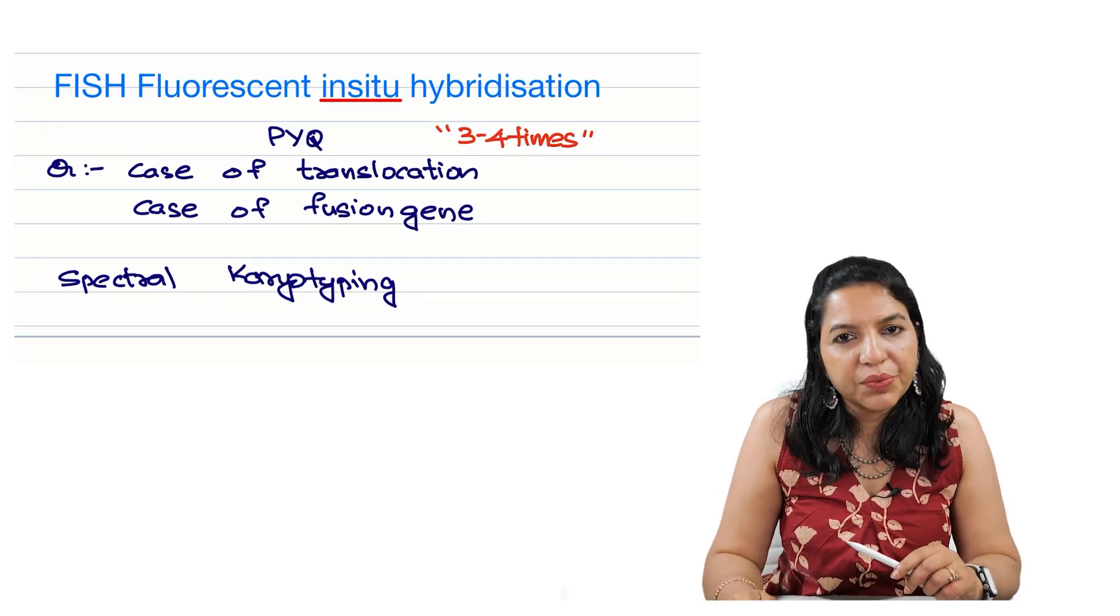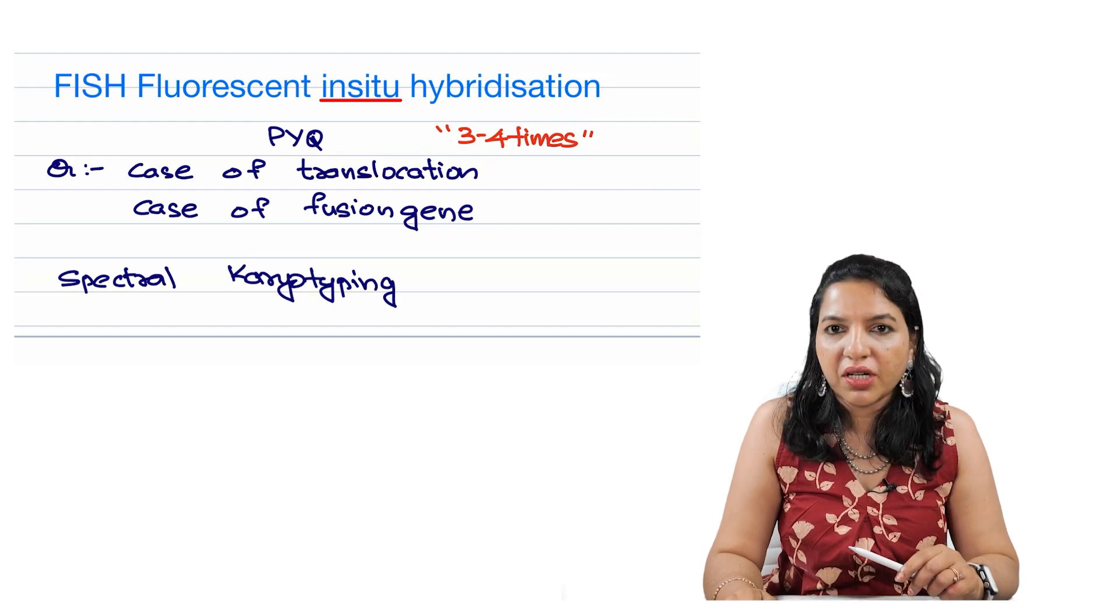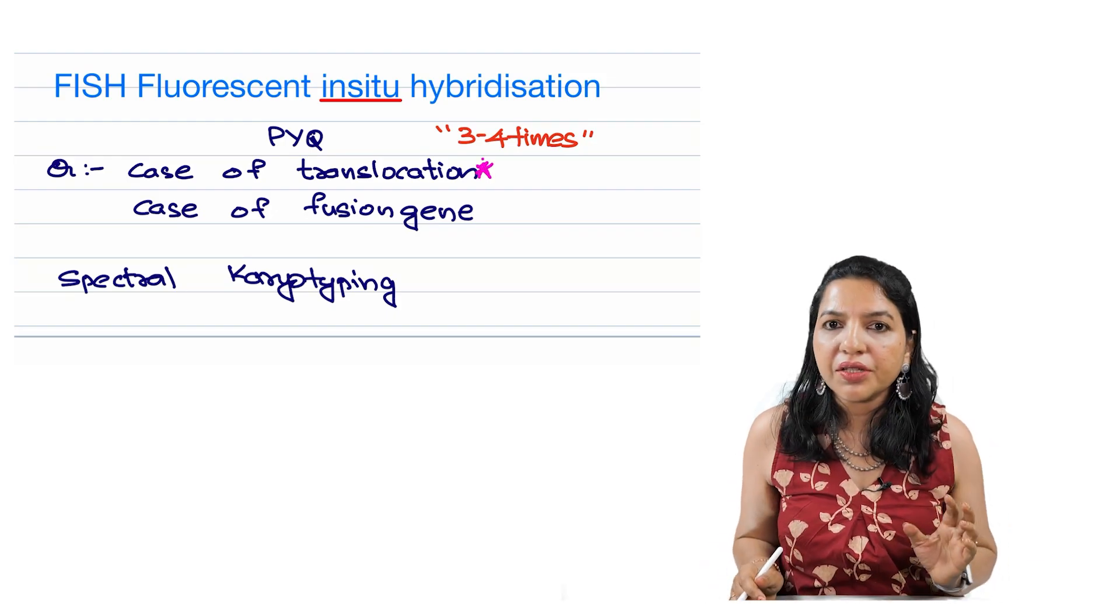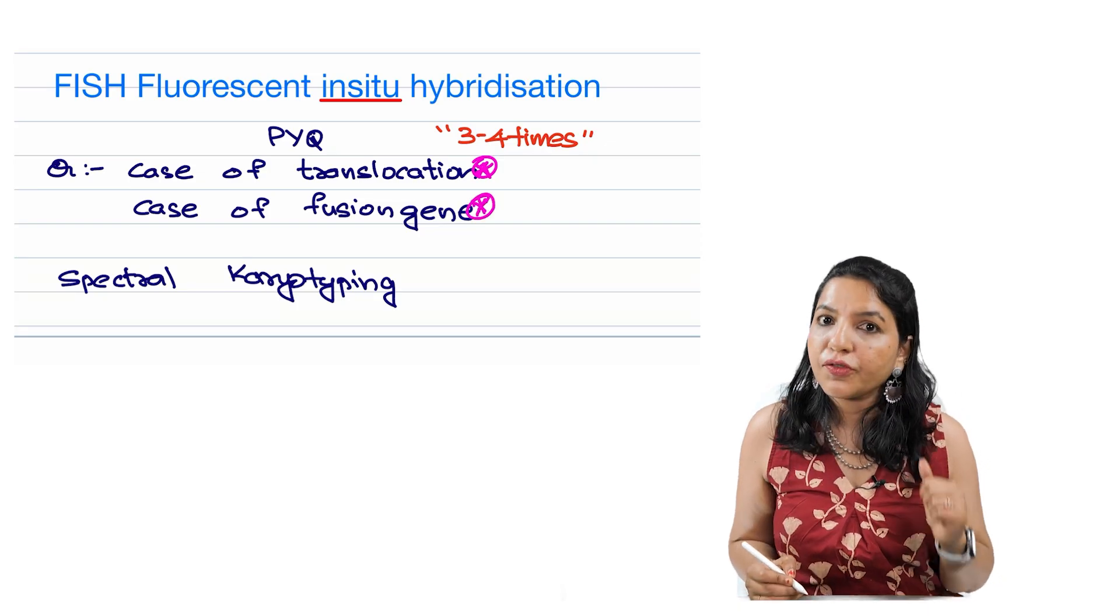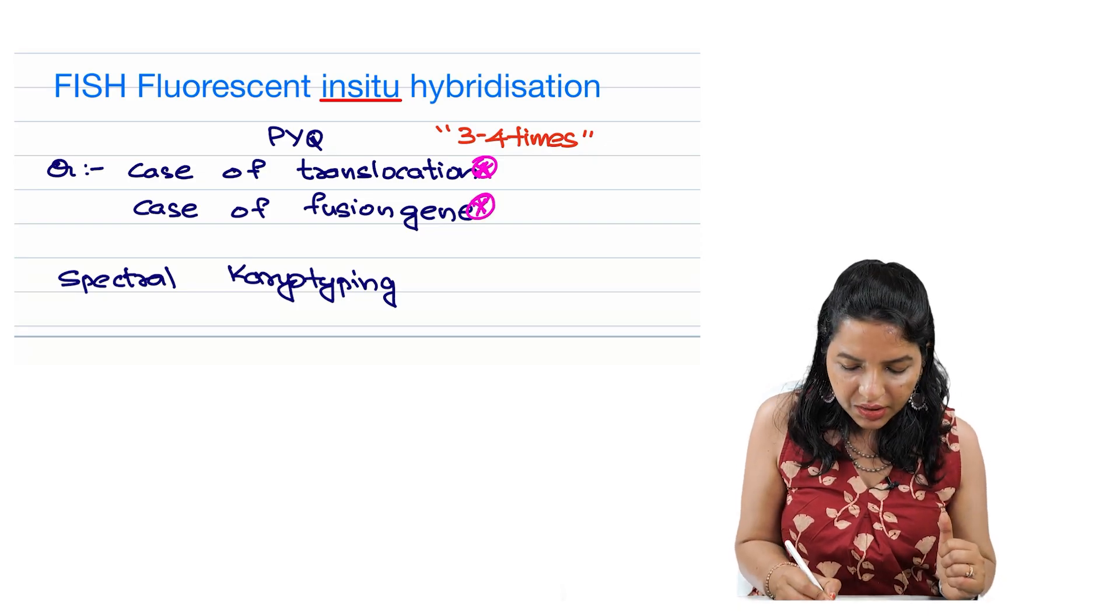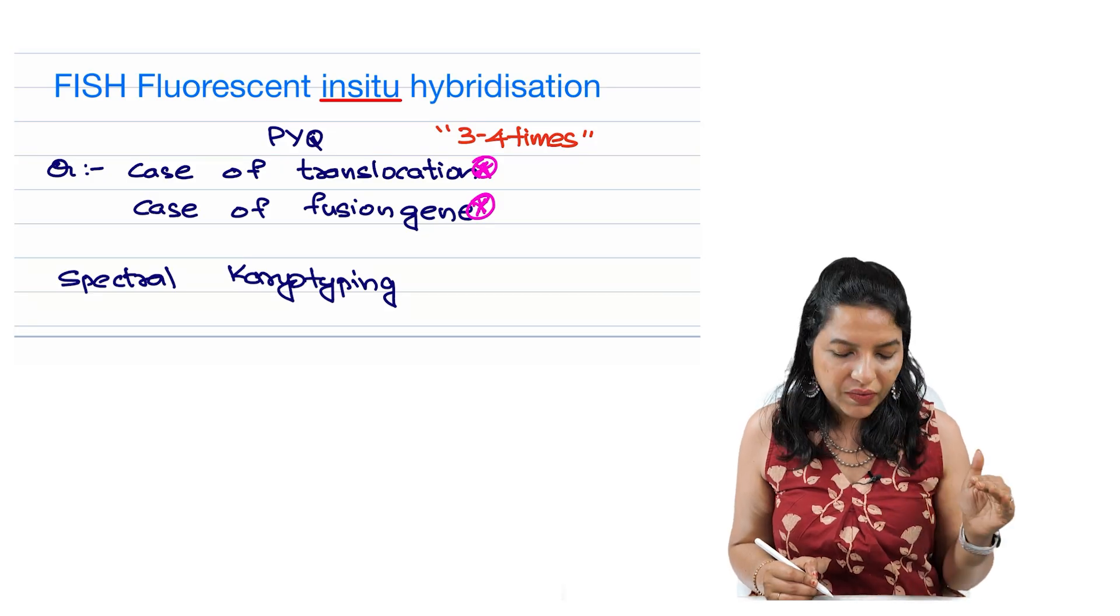Hi everyone, this is ETC3 biochemistry. Here we are discussing fluorescent in-situ hybridization, otherwise FISH. The question that you can get is either a case of translocation or a case of fusion gene. These are the questions asked, and FISH is a very frequently asked question in previous years.